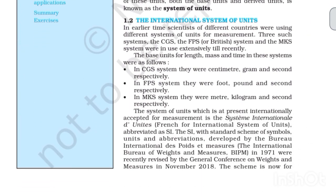The International System of Units. In earlier times, scientists of different countries were using different systems of units for measurement. Three such systems — the CGS, the FPS or British system, and the MKS system — were in use extensively till recently. The base units for length, mass and time in these systems were as follows.